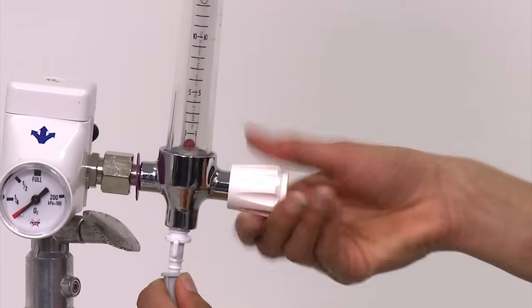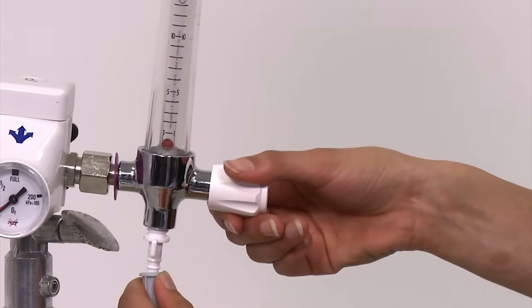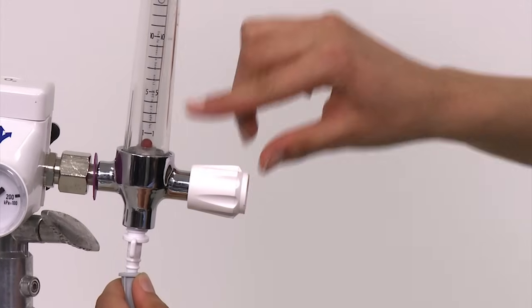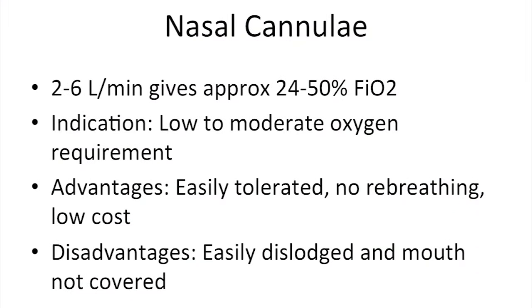Normally on a ward, the tubing can be attached to an oxygen tap on the wall. You can control the flow rate of oxygen going through the device using a flow meter. The design of these may vary between hospitals, but in general, the centre of the ball or marker will tell you the flow rate in litres per minute. Nasal cannulae can deliver flow rates of between 2 and 6 litres per minute. What we are really interested in is the FiO2 — the fraction of oxygen inspired by the patient. For nasal cannulae, 2 to 6 litres per minute equates to an FiO2 of between 24 and 50%.